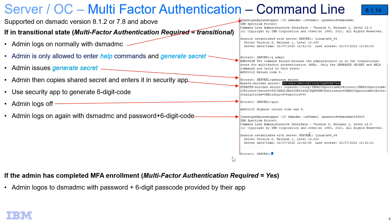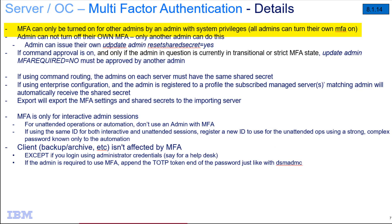In this demo, I'll show how multi-factor authentication works with the administrator command line — walking through a system administrator turning on MFA for another administrator, that administrator logging on, generating the secret, using an app to get the six-digit code, and logging back on with that code. MFA can only be turned on for another admin by an admin with system privileges, but all admins can set their own MFA to on.